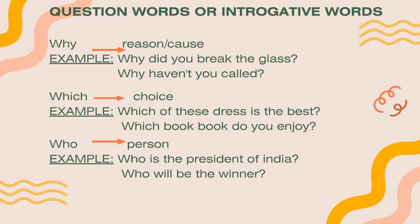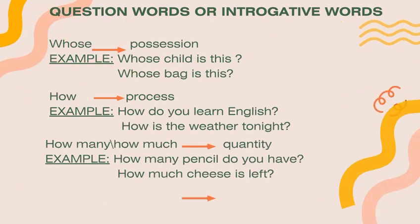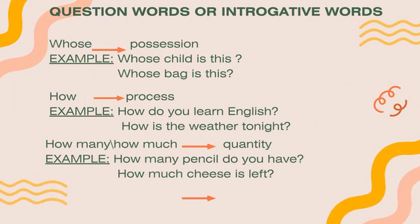Or 'Which book do you enjoy?' Number six: 'who' — when you ask about any person. For example: 'Who is the president of India?' or 'Who will be the winner?' Number seven: 'whose' — when you ask about any possession.